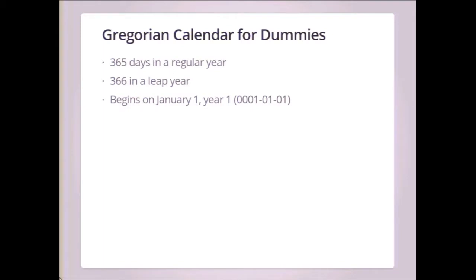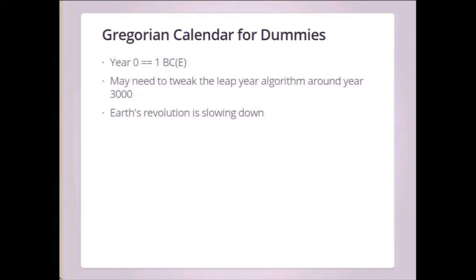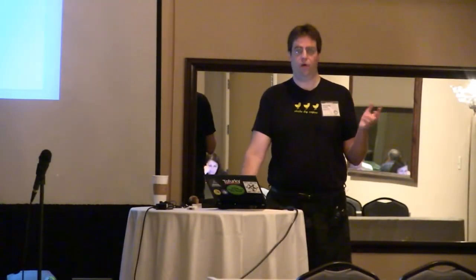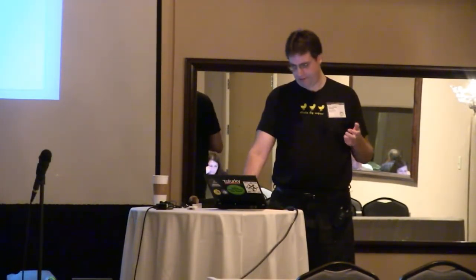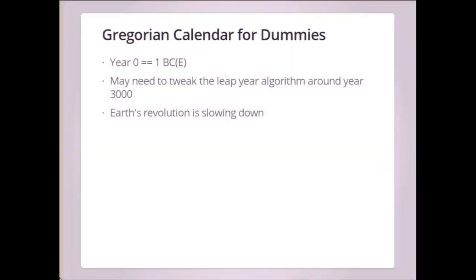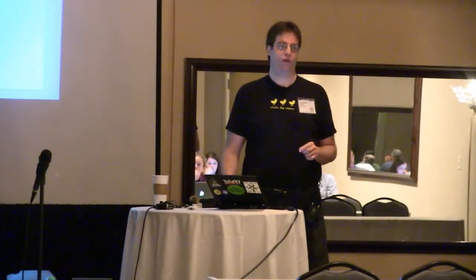The latest countries to adopt it were like Russia and some others in the early 1900s. The calendar starts on year one, but you can count backwards — year zero is also referred to as one BC or BCE. We might need to tweak the leap year algorithm around year 3000, since the Earth's revolution around the sun is slowing down. Eventually it'll slow down so much we'll crash into the sun — or the sun will have expanded and swallowed the Earth. So, take away: we're all doomed.